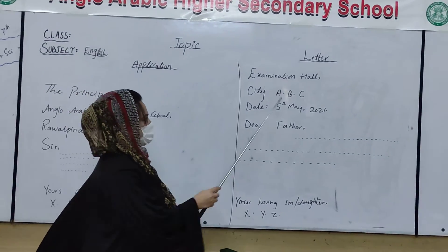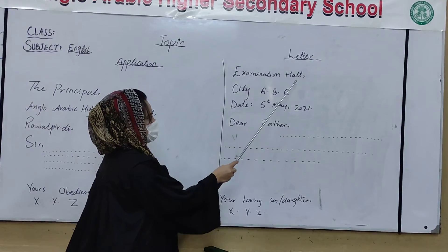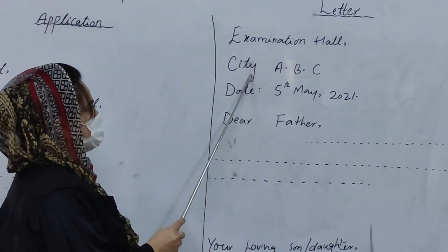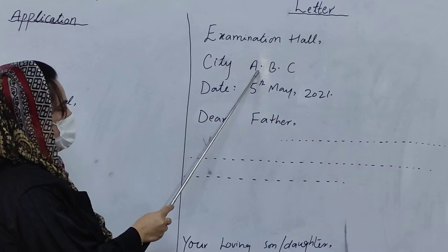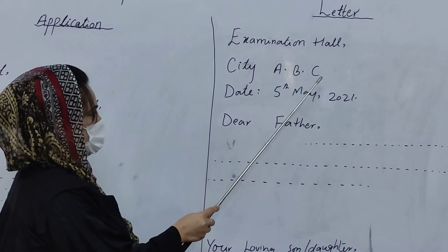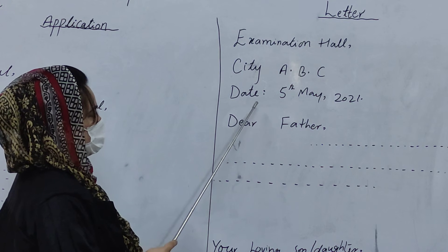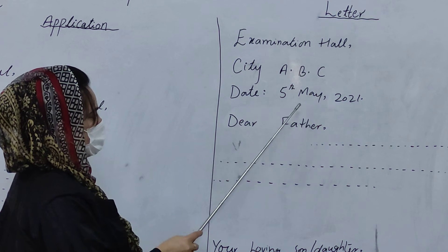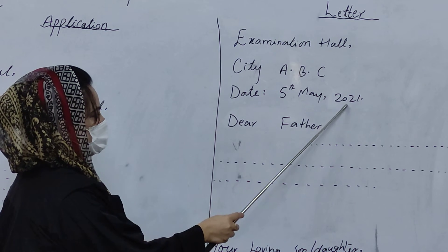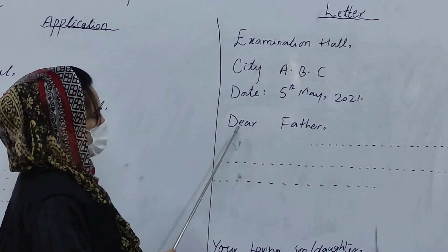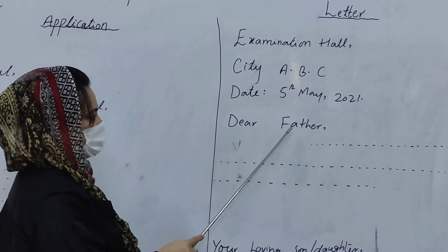Now come to the pattern of a letter. First of all, you have to write 'Examination Hall,' comma, 'City,' then A dot B dot C — with a dot between A and B, and between B and C, but no dot after C. Again the date: you have to write the date in this way — '5th May,' comma, '2021,' full stop.